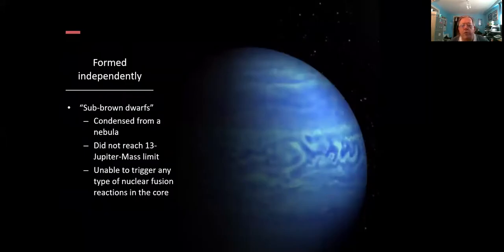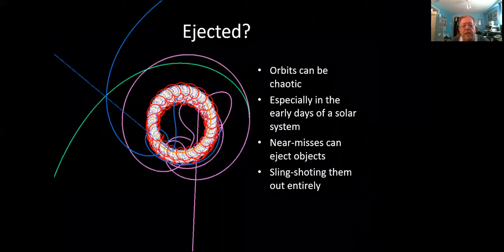So perhaps they might be formed independently. We might have the sub brown dwarf sized objects. They didn't reach that 13 Jupiter mass limit to be called a brown dwarf because they can't trigger nuclear fusion in the core. Or they could be ejected by the chaotic orbits in a complicated solar system. Early on, this can happen, especially if you had perhaps a binary star system that had formed a bunch of planets as well. One of them could have a near miss with one of the binary companions and be shot out into deep space on parabolic or hyperbolic orbits never to return.